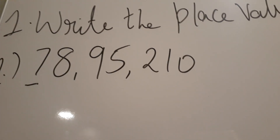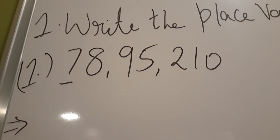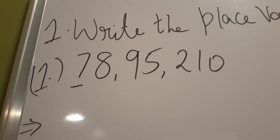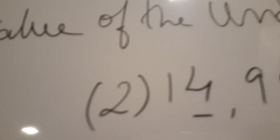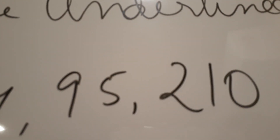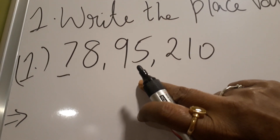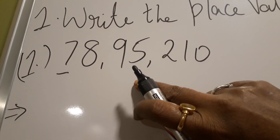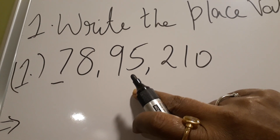Good morning students. Today we will continue with our practice set 5, question number 1: write the place value of the underlined digit. Here you have a 7-digit number, and whichever number is underlined, you need to tell the place value of that digit.